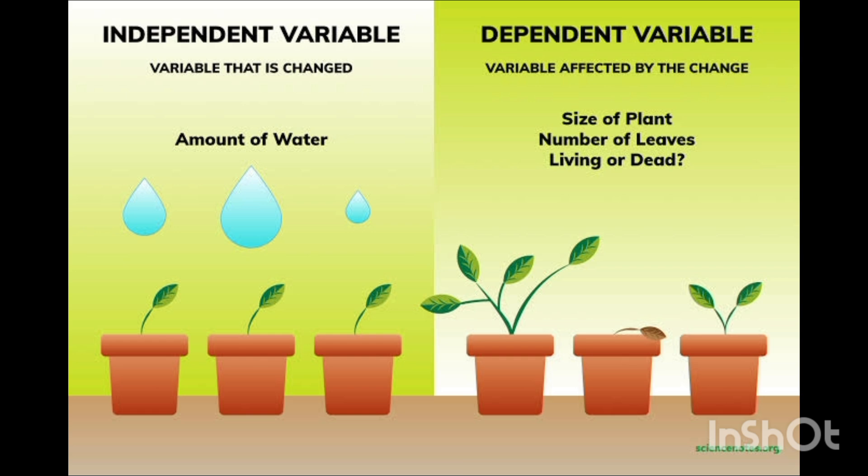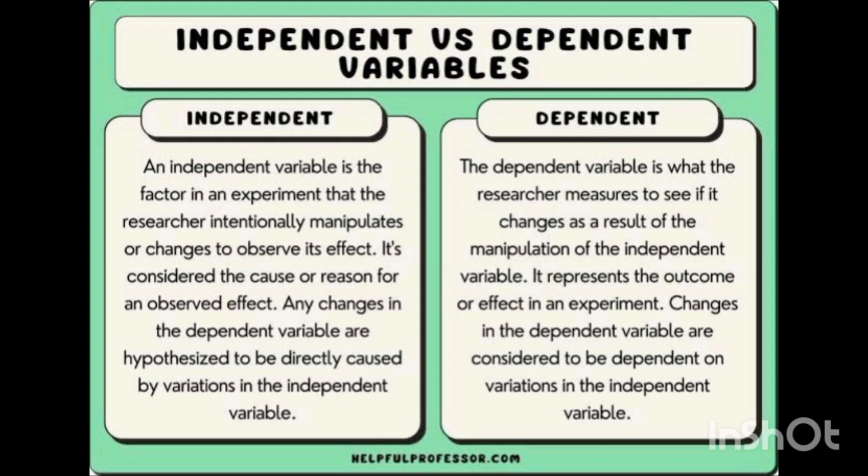For example, the independent variable is like a variable that is changed, such as the amount of water. The dependent variable is what is affected by that change — like the size of the plant, number of leaves, or whether it is living or dead. More water you give, the more the plant grows and the more the leaves grow.